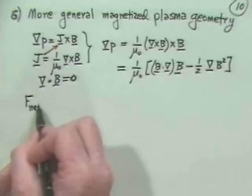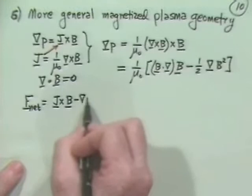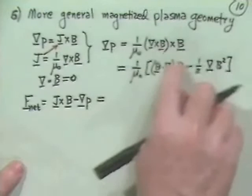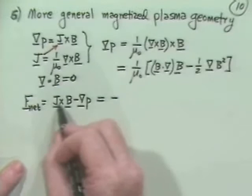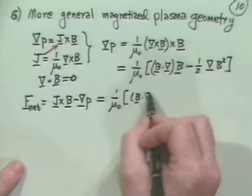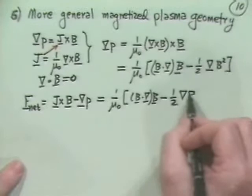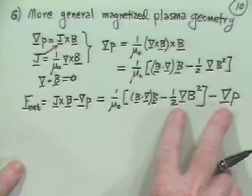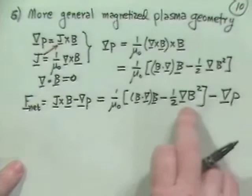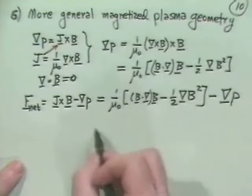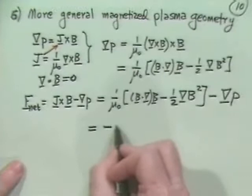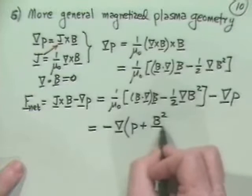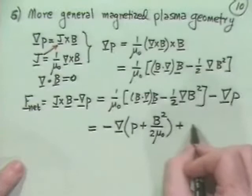Now, if we go back and play our little games here, remember the net force was equal to J cross B minus grad P. What we can say is the net force equals minus the gradient of kinetic pressure plus magnetic pressure, plus 1 over mu naught B dot del B.